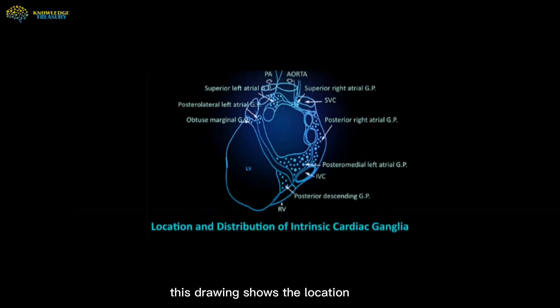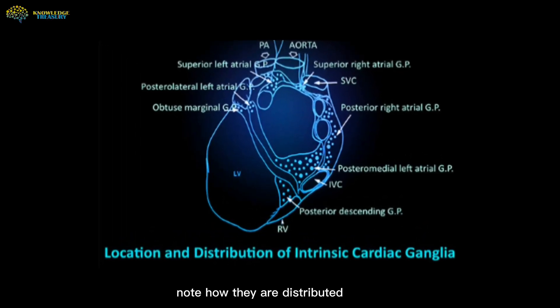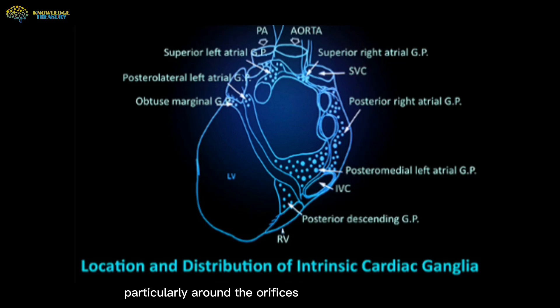This drawing shows the location and distribution of intrinsic cardiac ganglia. Note how they are distributed particularly around the orifices of major vessels.